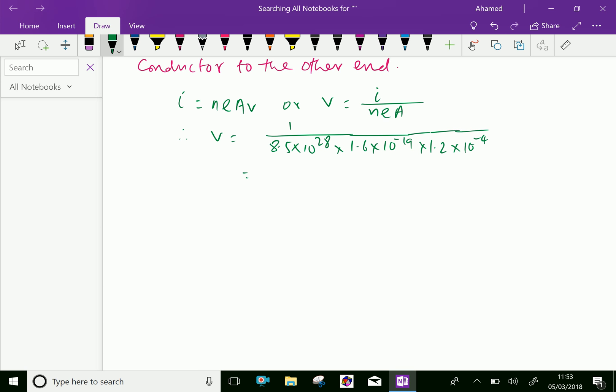We will calculate this. First, we write 1/(8.5×1.6×1.2) and the power is 28 minus 19 is 9, and 9 minus 4 is 5, so 10⁵.